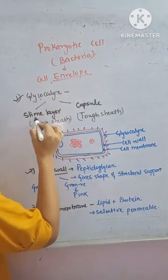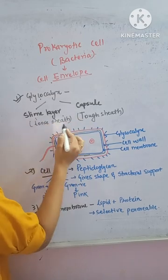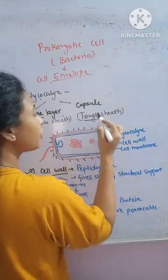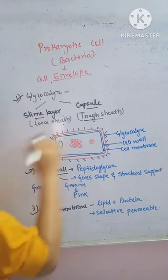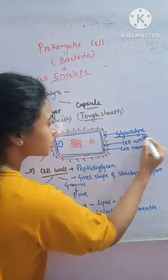Glycocalyx are of two types: slime layer and capsule. If it is a loose sheet, it is a slime layer. And if it is a tough, hard sheet, it is a capsule. As you can see, the red one is the glycocalyx.